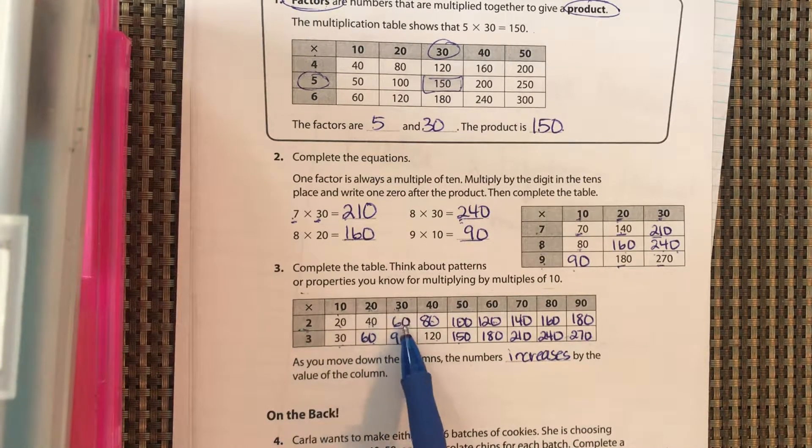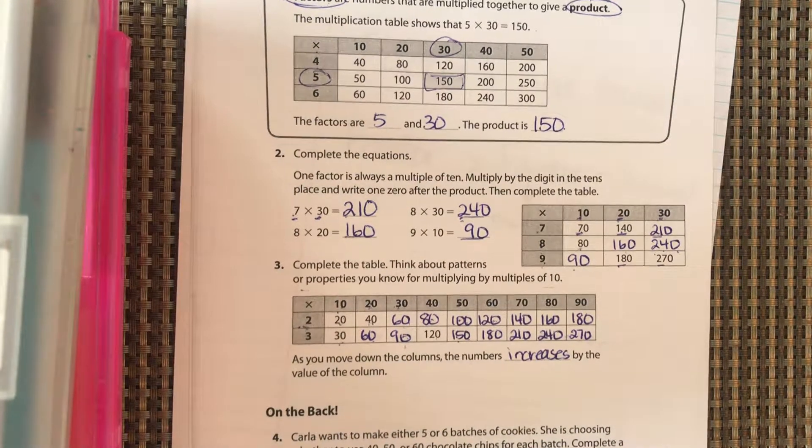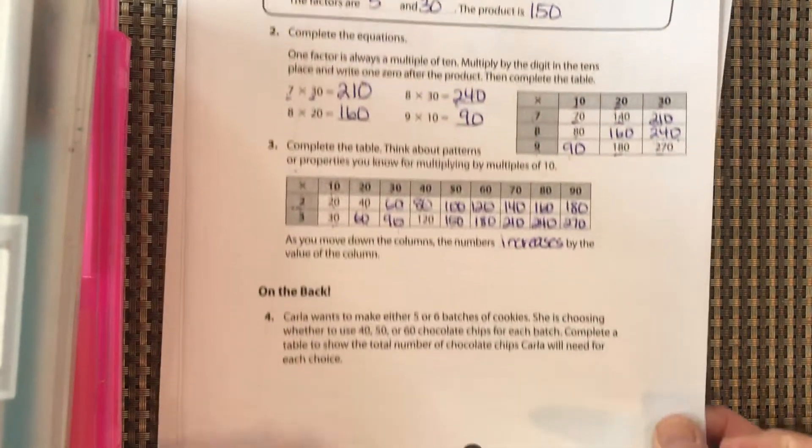Because you're moving from two to three: two groups of 20, three groups of 20; two groups of 30, three groups of 30. So it's just going to multiply and increase by that. Okay, let's take a look at the bottom.